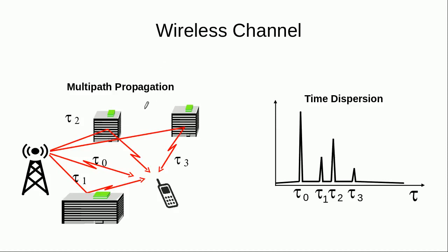One of the obvious problems of wireless communication is the multipath propagation phenomena. And what is that? For example, this base station or node B wants to send some information to this mobile station.